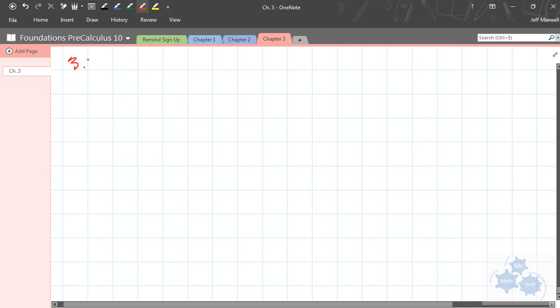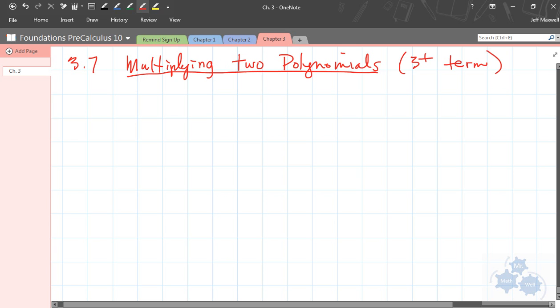So today's lesson in Foundations of Math 10 is 3.7, and what we're doing is multiplying two polynomials using the distributive property. The two polynomials are going to be at least binomials, probably greater. We've done the two binomials already, that's the FOIL method. So we're talking about, you know, with three plus terms, that sort of thing.